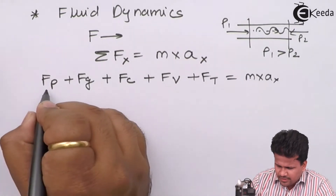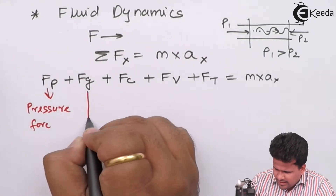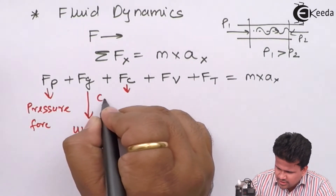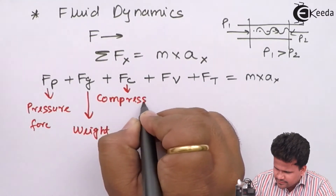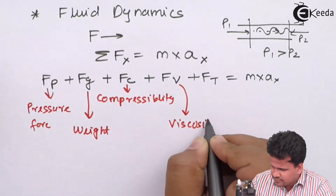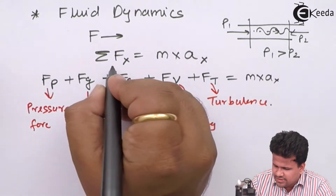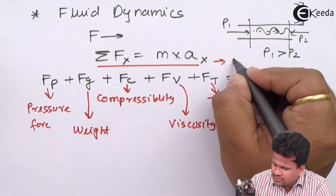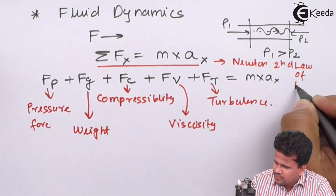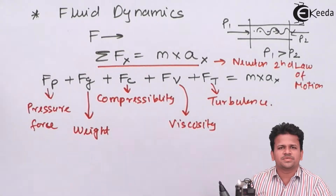These are all five types of forces acting on the fluid: FP is the pressure force, FG is the force due to gravity or weight, FC is the force due to compressibility, FV is the force due to viscosity, and FT is the force due to turbulence. Their sum equals mass into acceleration in a particular direction — this is Newton's second law of motion.